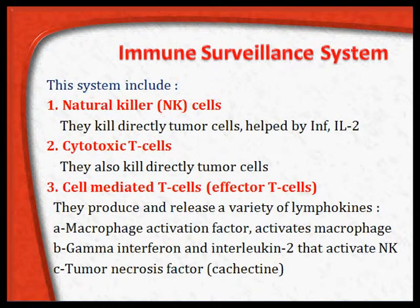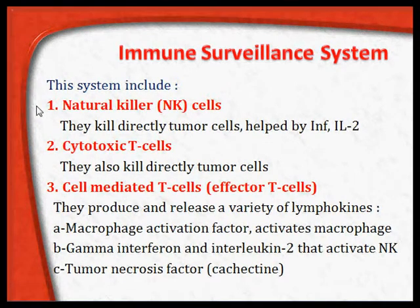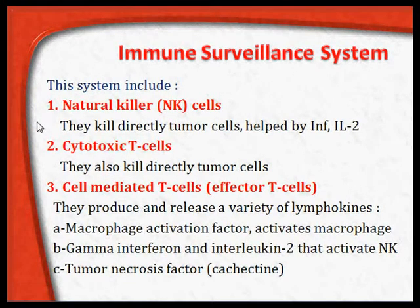How does the immune surveillance system work? It works by more than one mechanism. These include: one, the natural killer cells, also called the NK cells.